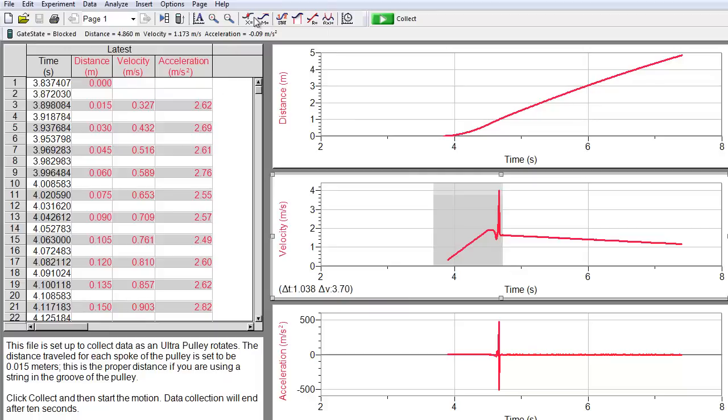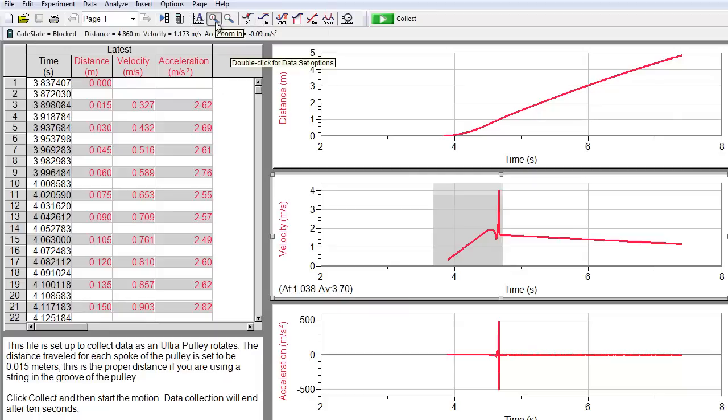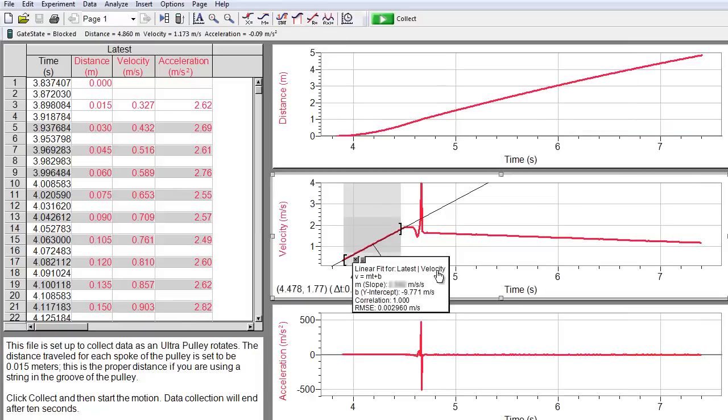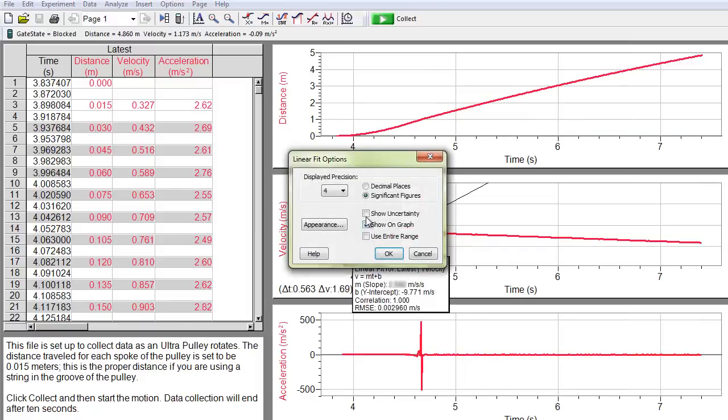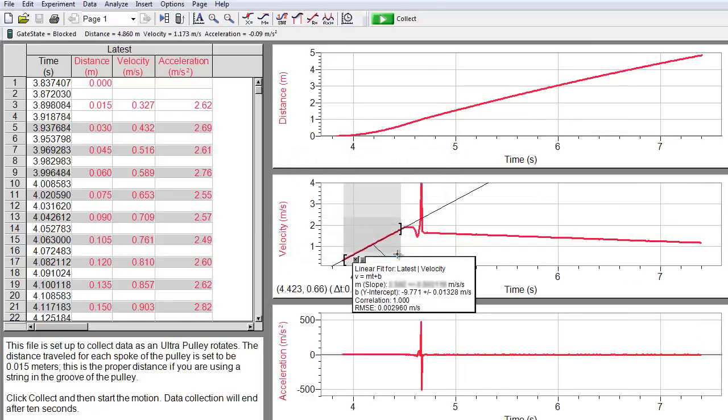So we'll zoom in on that up here with the plus button. And we'll highlight this for a linear fit. And of course, we should have it show uncertainty. And the answers are blurred out because you have to get your own data, obviously.